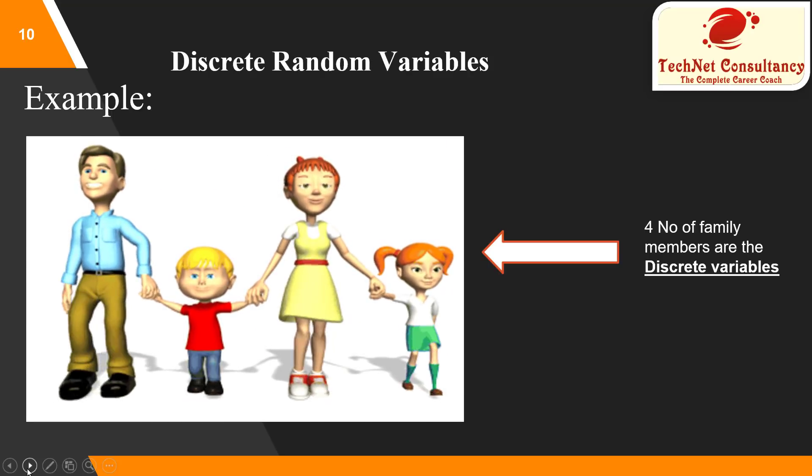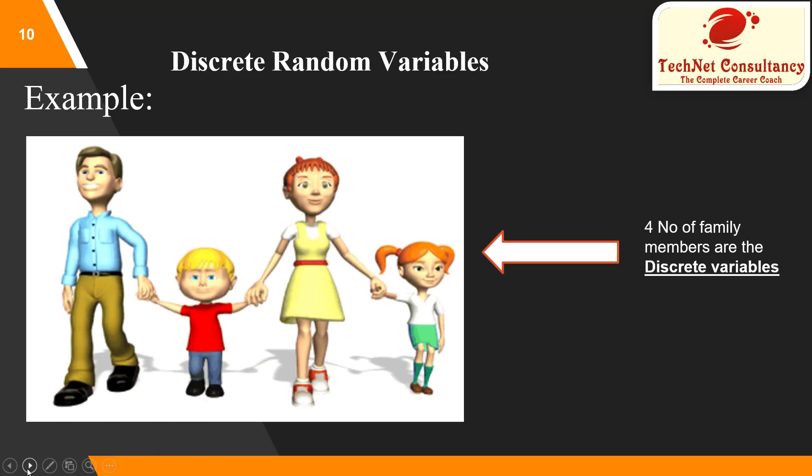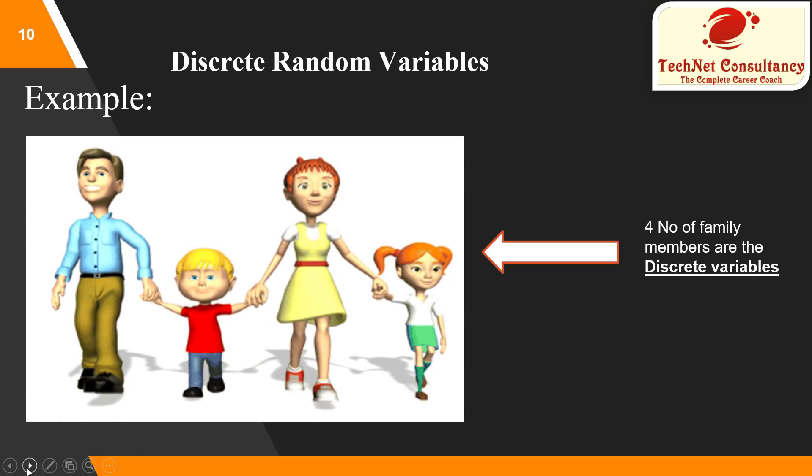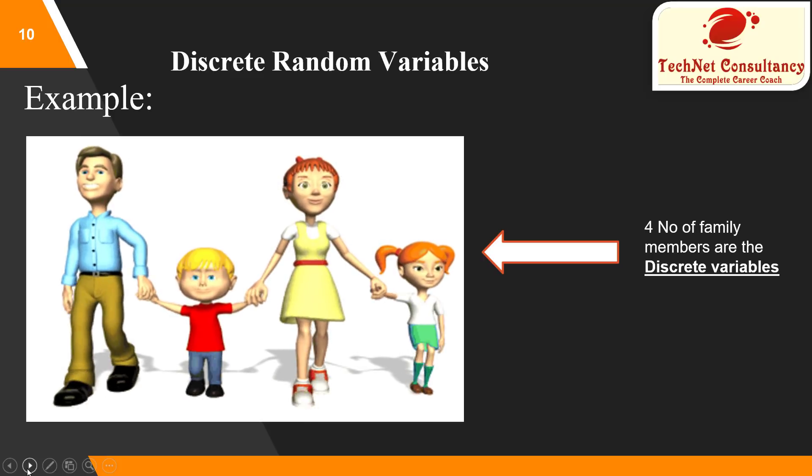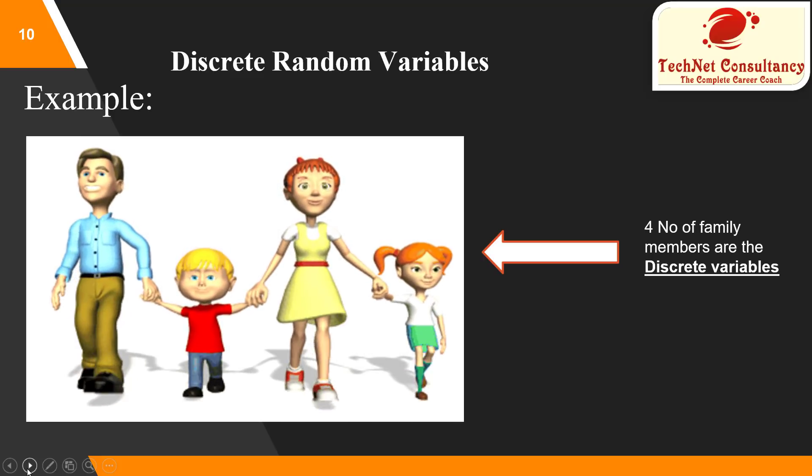As we can see in the figure, there are four members in the family, which is fixed. So, they are not in any range, but they are countable. So, we can say four number of family members are discrete random variable numbers.